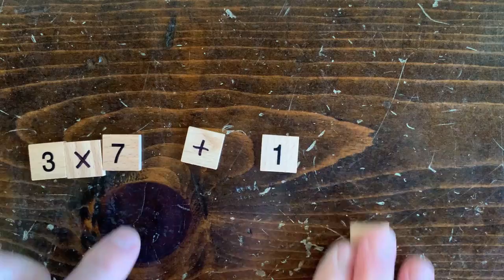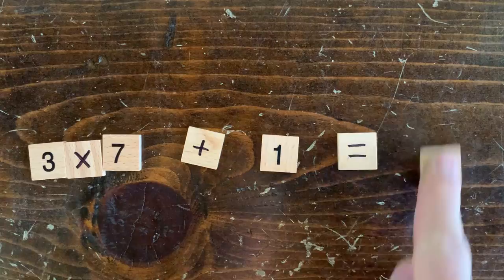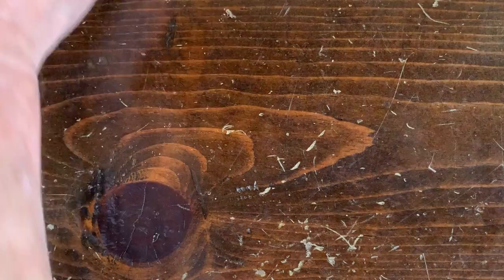For example, what's 3 times 7 plus 1? That's 21 plus 1 equals 22. And what's 22 divided by 2? Right, 11. Okay, that means we're ready to go.